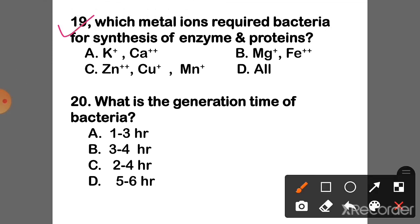Question 19: Which metal ions do bacteria require for synthesis of enzymes and proteins? The correct answer is Option D — All: calcium, potassium, magnesium, zinc, copper, and magnesium ions.